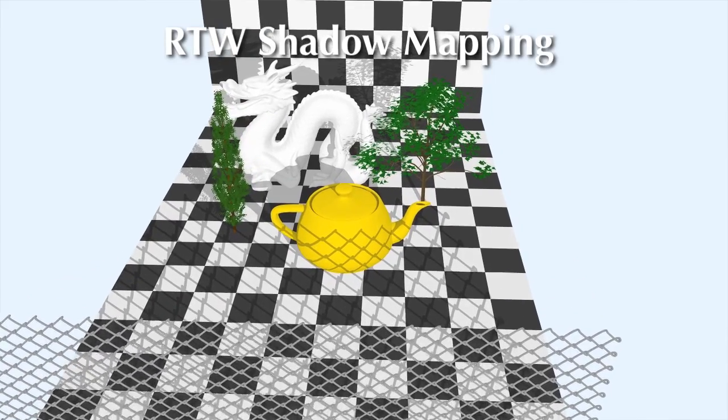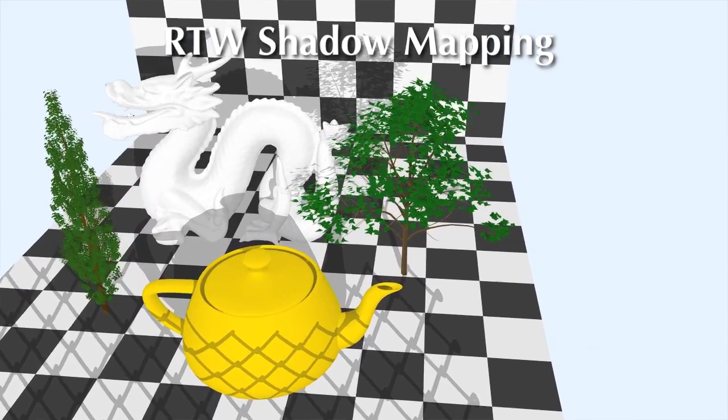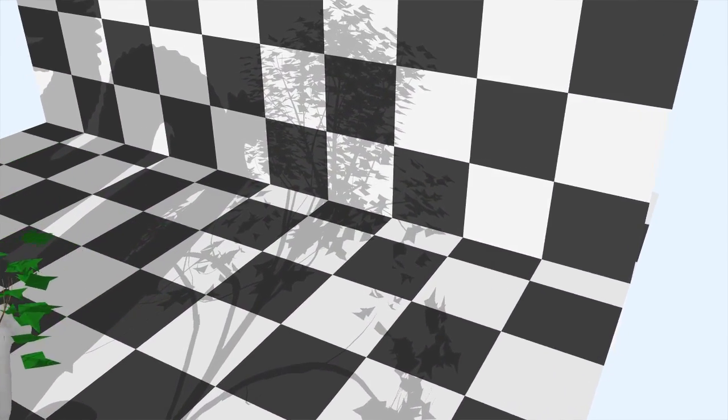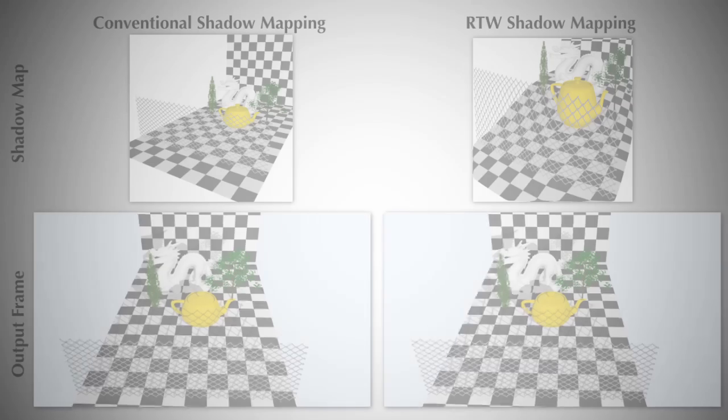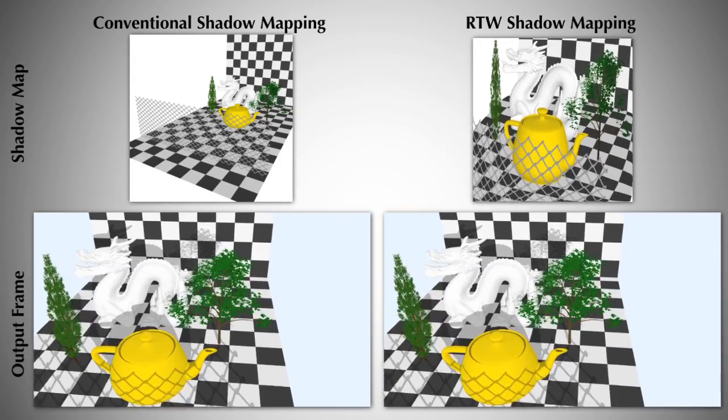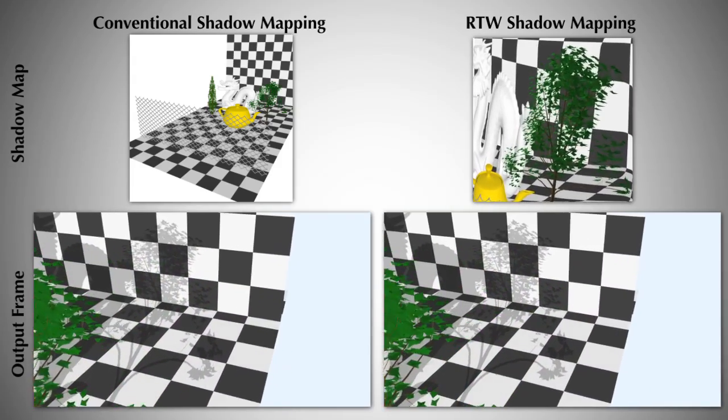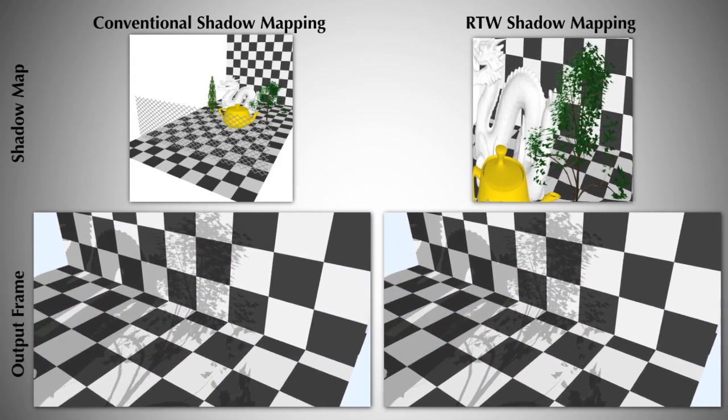We present the idea of Rectilinear Texture Warping for Fast Adaptive Shadow Mapping. This system produces a single layer shadow map, which uses a series of importance functions to adaptively sample dynamic scenes, lighting conditions, and viewpoints. As any of these conditions change, the shadow map automatically reallocates its resolution to maintain a high quality shadow. Here we see a side-by-side of a scene rendered with the conventional shadow map and our adaptive shadow map.